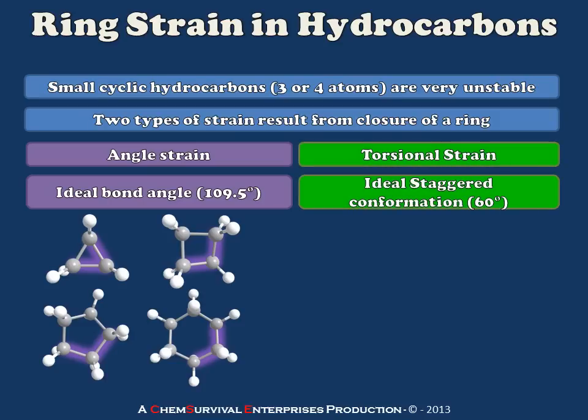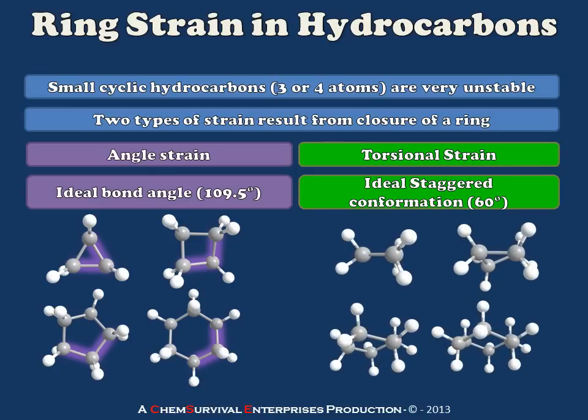The other component is called torsional strain. This results from the fact that an ideal staggered conformation of 60 degrees is not always obtainable in small cyclic molecules. So we'll be looking at them from a second perspective, which will allow us to assess those dihedral angles and determine whether they are contributing to this instability or whether they've reached an ideal dihedral angle. So let's get started.